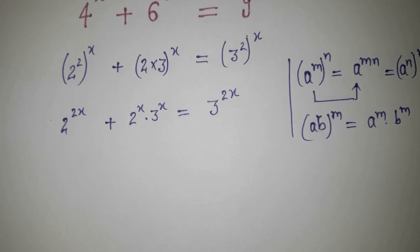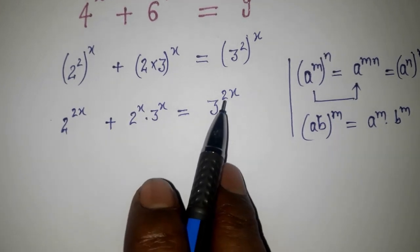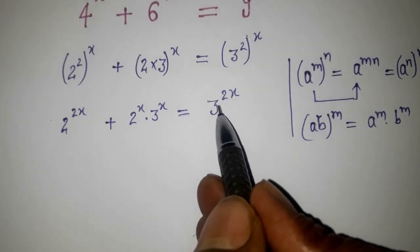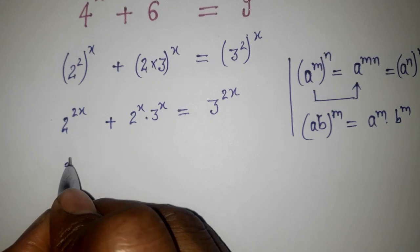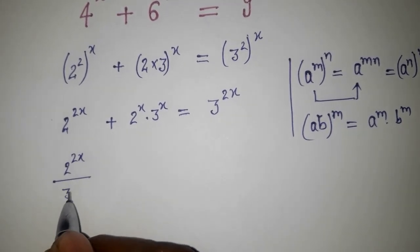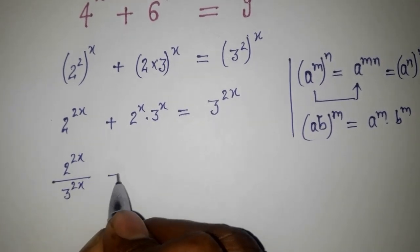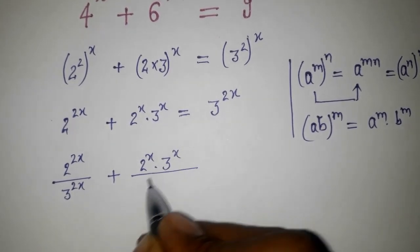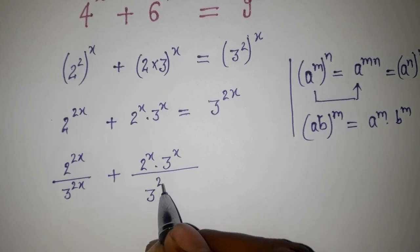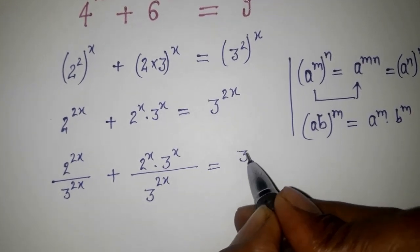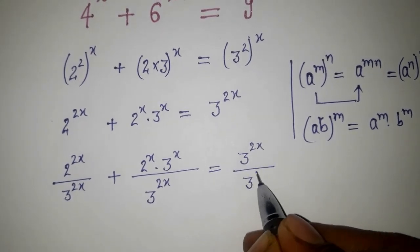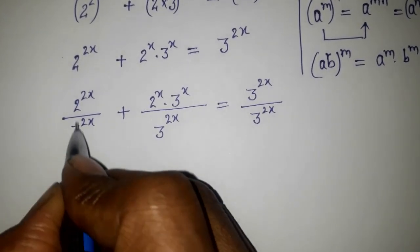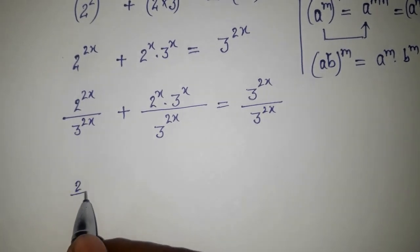Now I am going to divide both sides by 3 to the power 2x. So we have 2 to the power 2x divided by 3 to the power 2x, plus 2 to the power x into 3 to the power x divided by 3 to the power 2x, and that equals 1. Now these terms have the same exponent base structure.